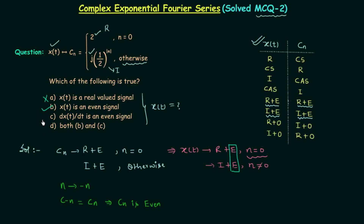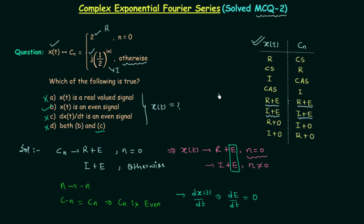So option B is the correct option. Option C says DXT by DT is an even signal — it is talking about the first derivative of signal XT. We know XT is an even signal, so this implies we are taking the derivative of an even signal. From the properties of even and odd signals, the first derivative of an even signal gives an odd signal. So DXT by DT being even is absolutely incorrect. Option D is also incorrect because it includes option C. Therefore, option B is the correct answer, and it is very easy to solve questions using XT-CN pairs.